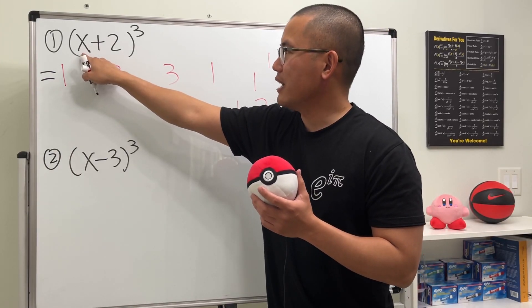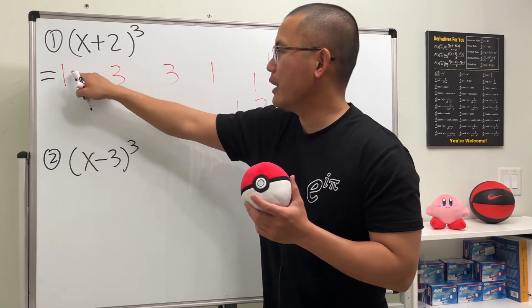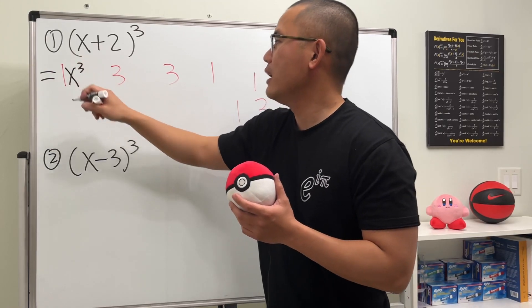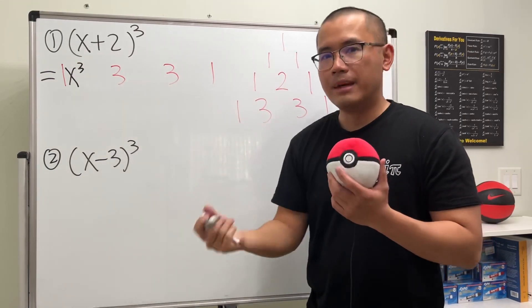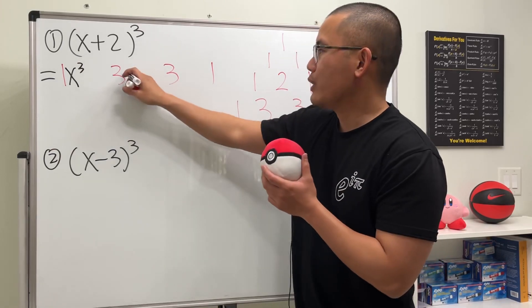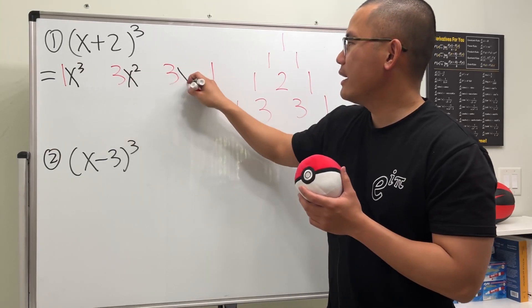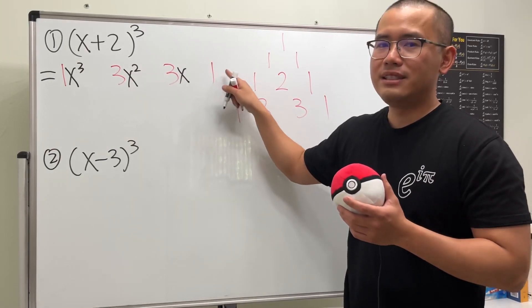The first term is x and it's to the third power, so go ahead and start with x to the third power. And then we go to the next term and the power goes down by one, so we have x square, and then again x to the first power, and lastly no x.